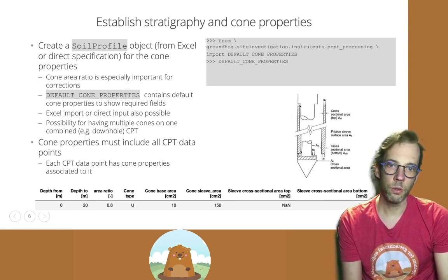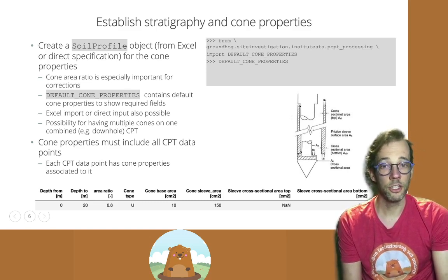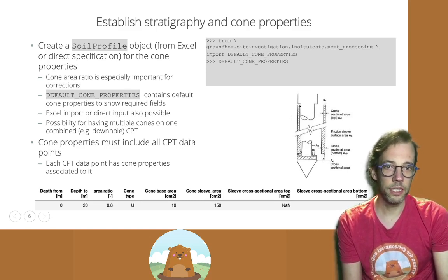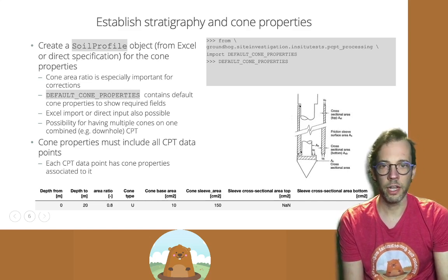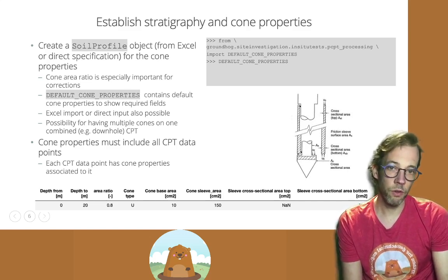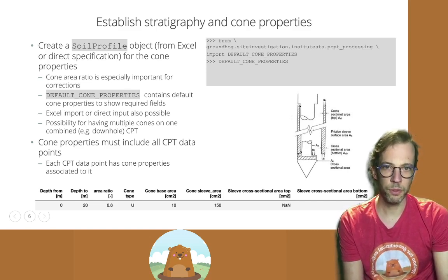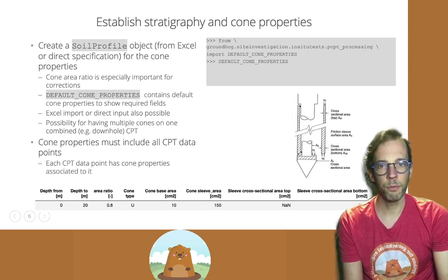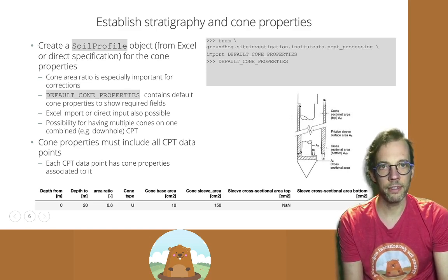The most important parameter is the cone area ratio, which gives the ratio of the shaft of the load cell rod to the total cone cross-sectional area. Because on the rear of the cone, if there is a pore water pressure filter, you can have some pressure acting downwards, and that needs to be corrected for.